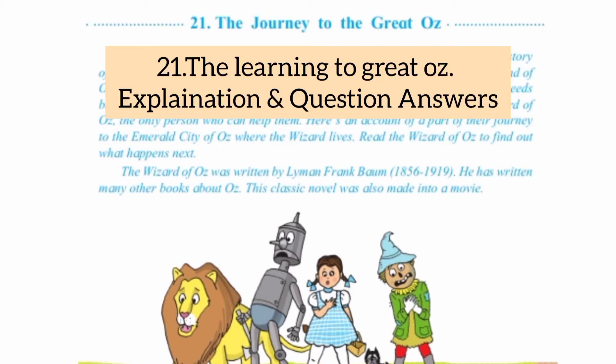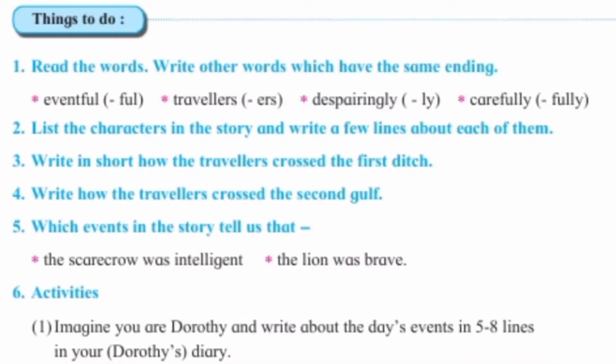Hello my dear students of class 5. Today I shall be giving the answers of chapter number 21, 'The Journey to the Great Oz.' Let's begin with the question answers. First one is given as: read the words, write other words which have the same ending.